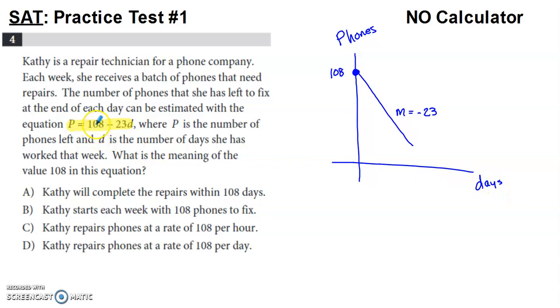I know I'm going to start my graph at the number that's not being multiplied by the variable, so b on the y-axis or the P-axis in this case. So that's going to be positive 108. And then I'm going to have a slope of negative 23.